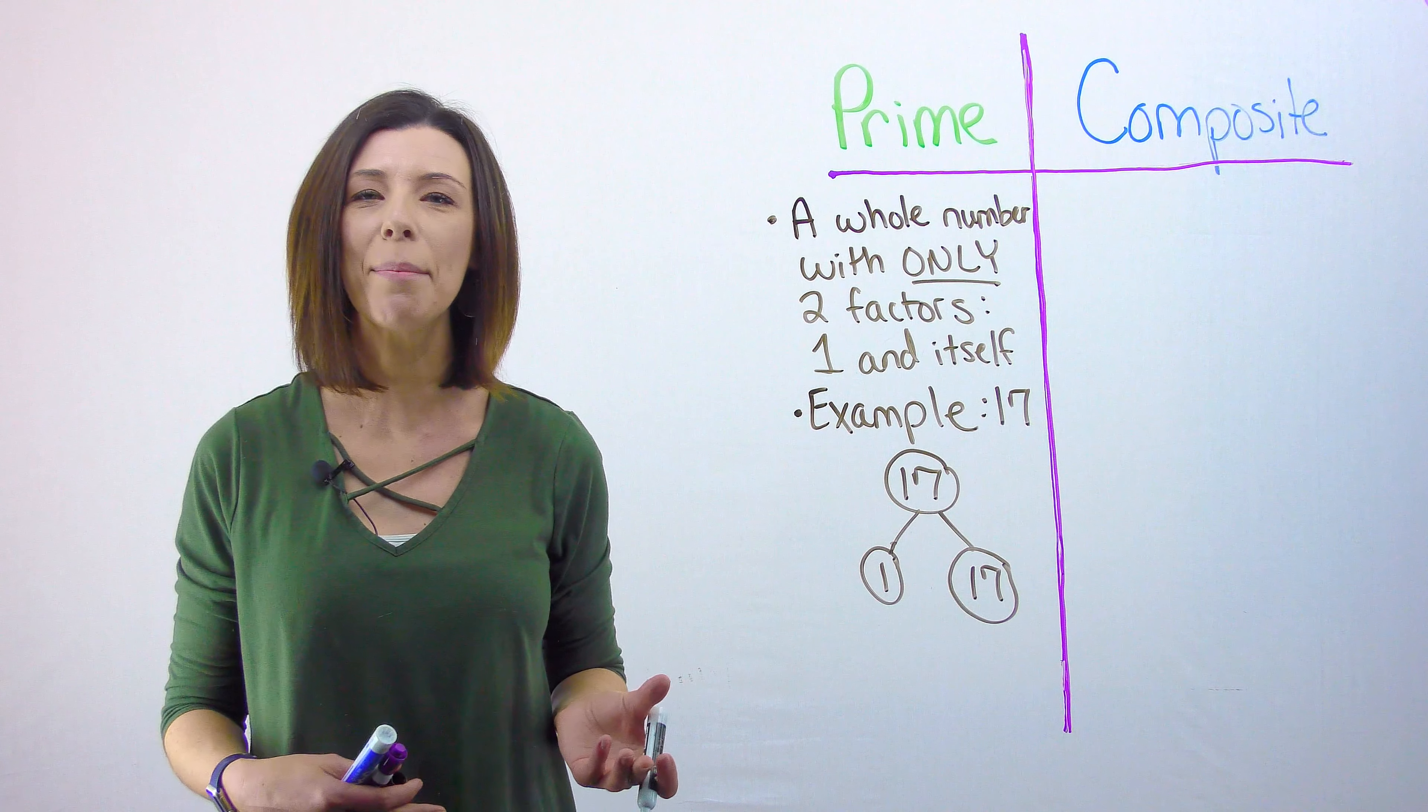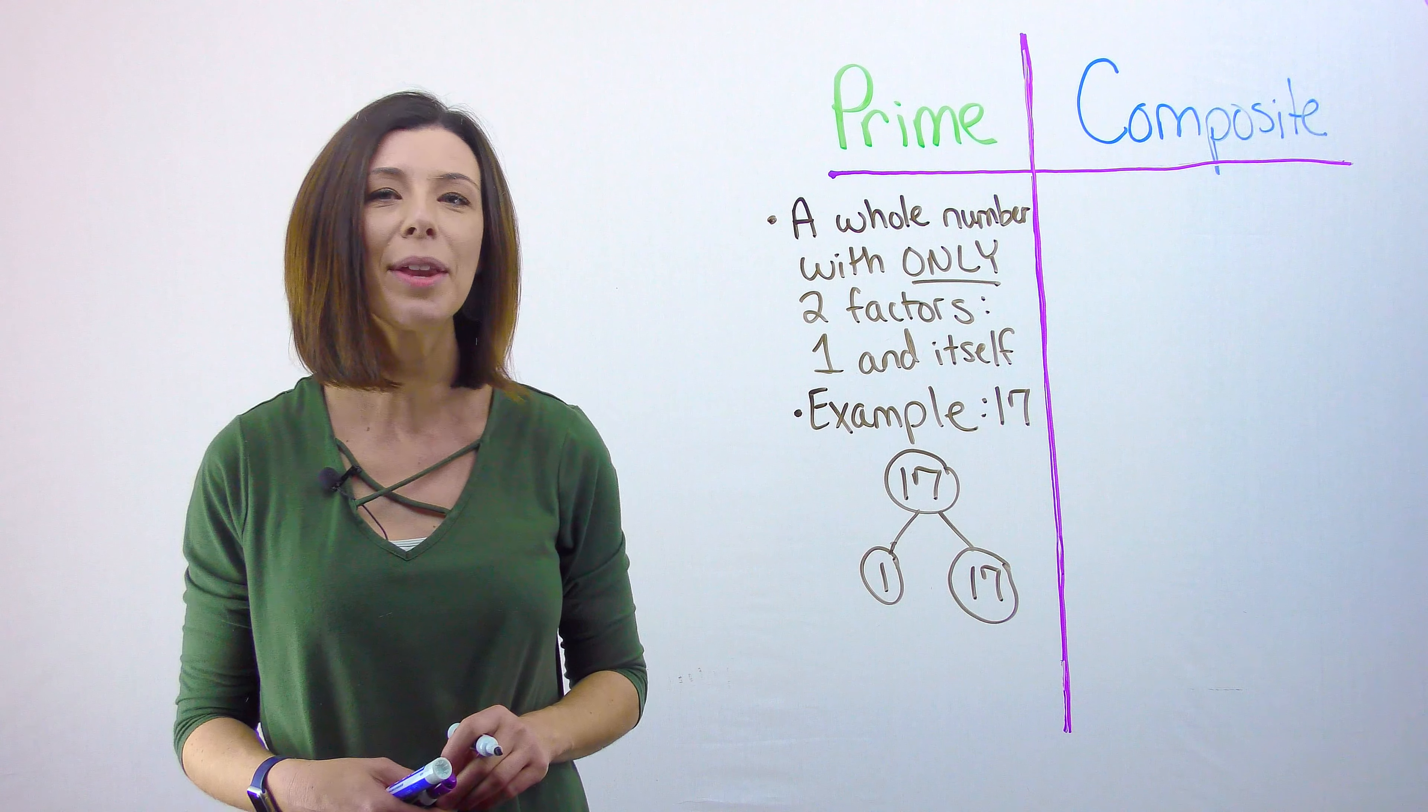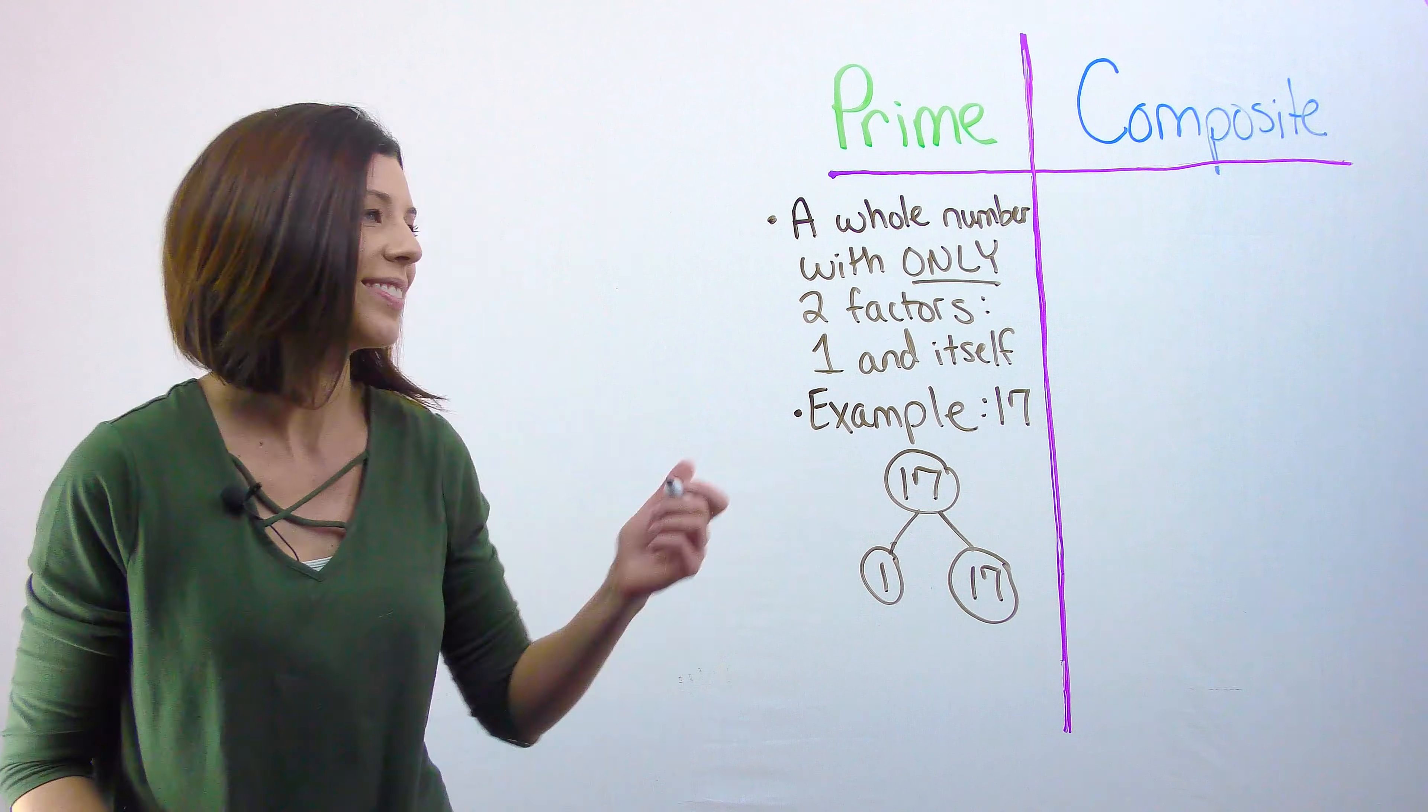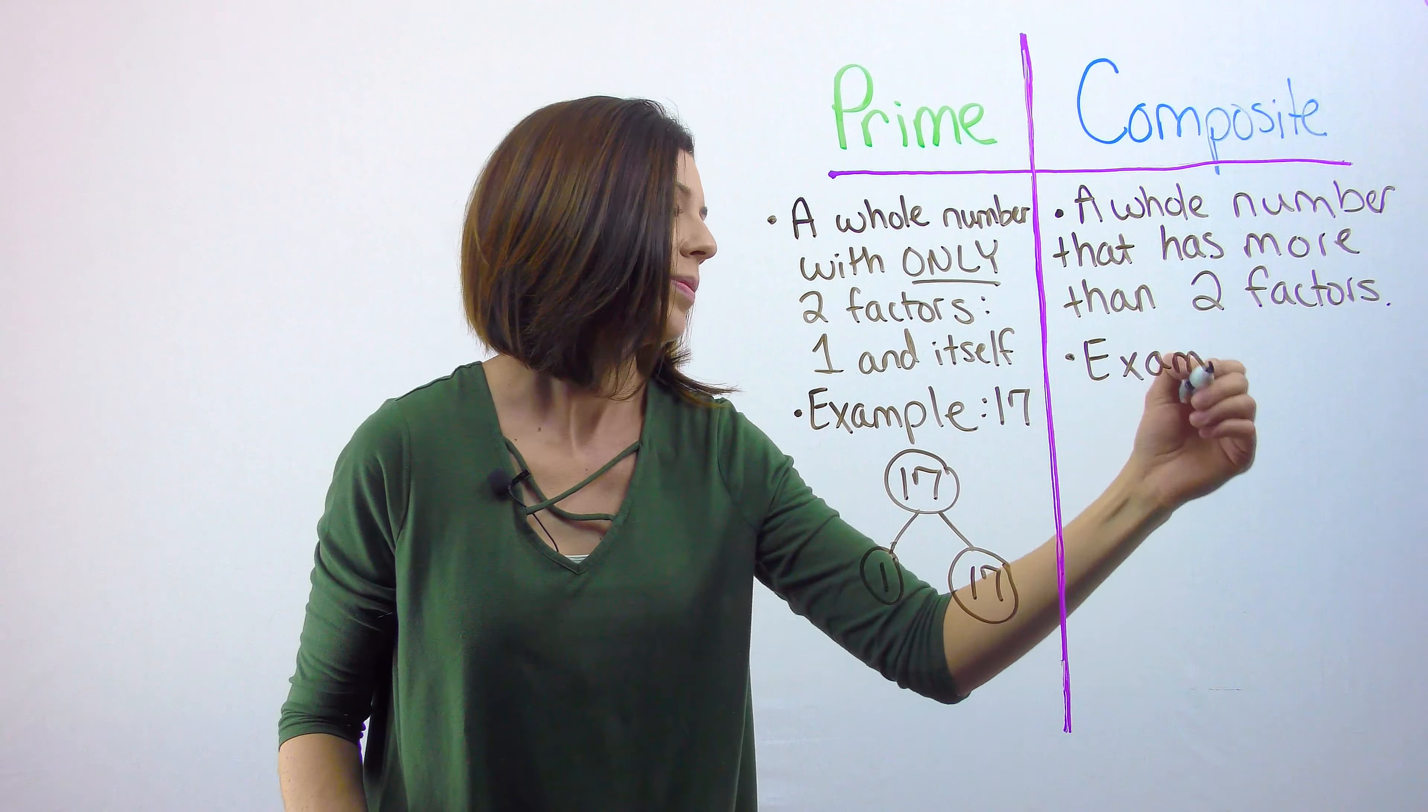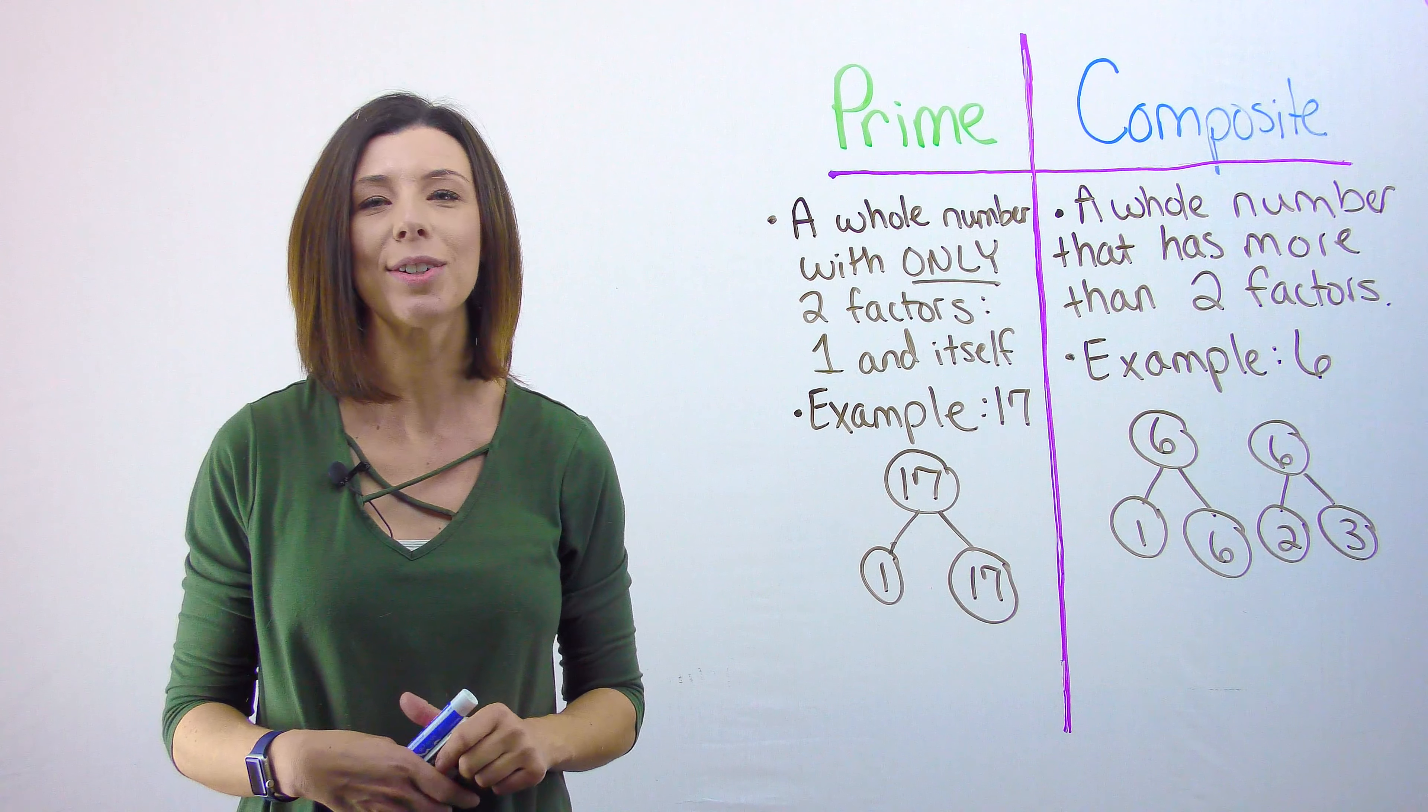A composite number is one that has factors in addition to one and itself. Take, for example, the number six. I know that I can multiply one times six to get six, but also two times three to get six. You can see that I'm using number bonds to show my factors for six.